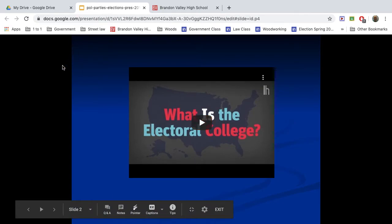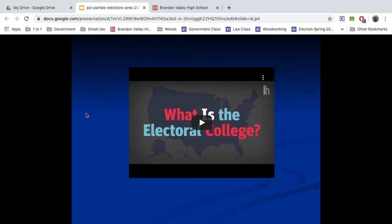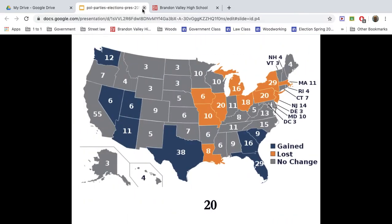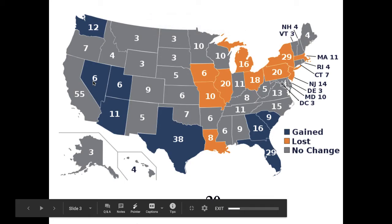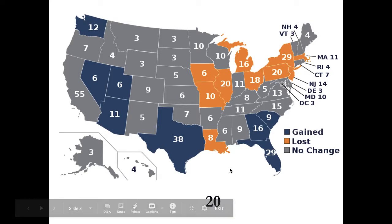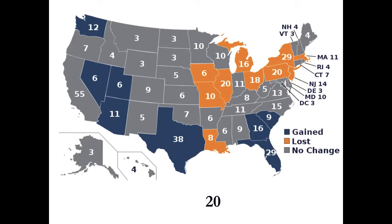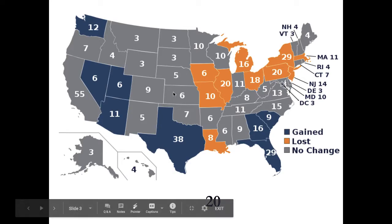Actually, in the 2016 election there were some what we call faithless electors — we'll get into that another day. Let's summarize this. Here is an electoral college map from 2010 through 2020 — it will change again with redistricting, because the total electoral votes each state has is somewhat based on House representation. You can see the electoral votes that each state has.